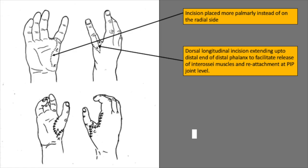The fourth important step is the skin incision, which is placed more palmarly instead of on the radial side as was traditional. The dorsal longitudinal incision also facilitates the release of the interosseus muscles and their reattachment.